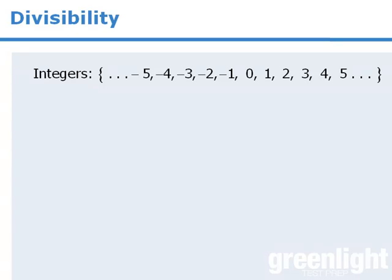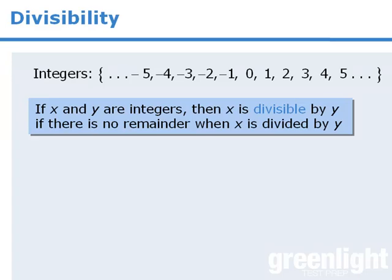One of the central themes of integer properties is divisibility. If x and y are integers, then we say that x is divisible by y if there is no remainder when x is divided by y.